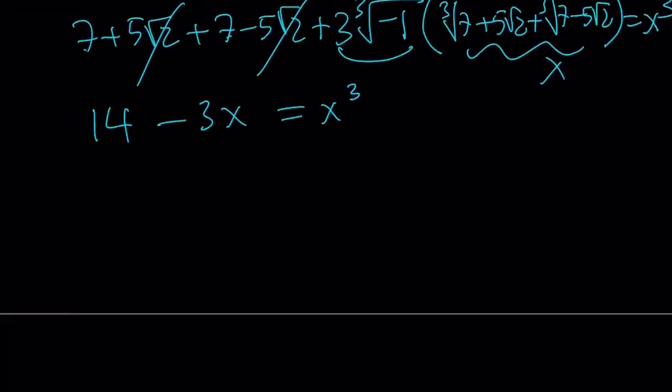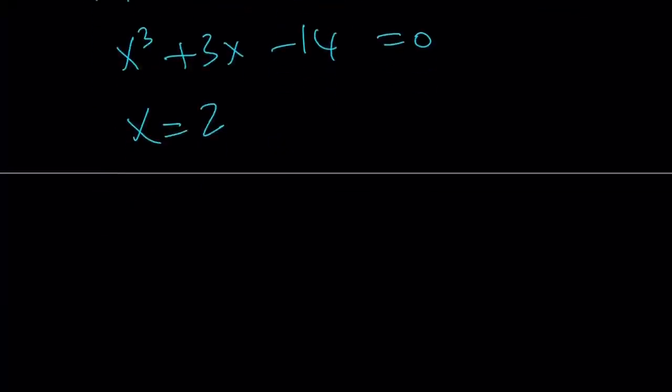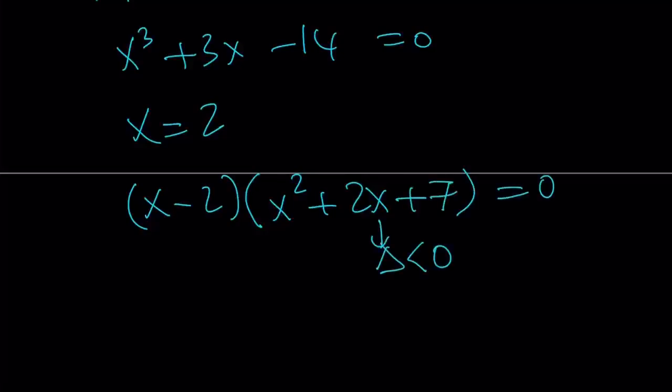Let's put everything on the same side. x cubed plus 3x minus 14 is equal to 0. If I ask you to guess any integer solutions you would probably say x equals 2 works. And when you divide by x minus 2 you'll notice that this expression can be written as x squared plus 2x plus 7 multiplied by x minus 2. And notice that this equation also has a negative delta which means it has no real solutions. Therefore the only solution happens to be x equals 2.